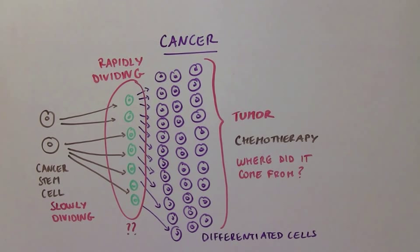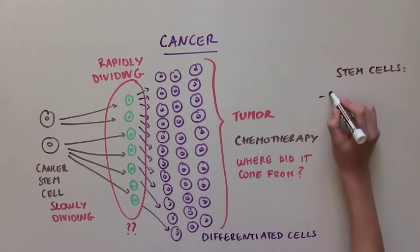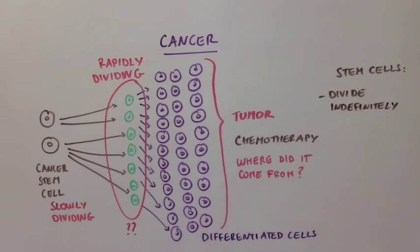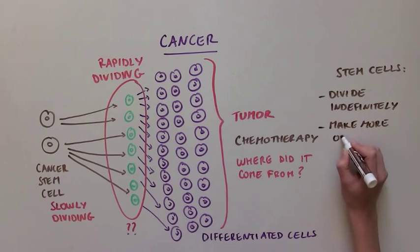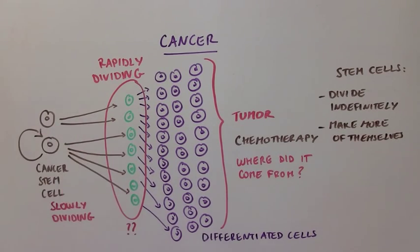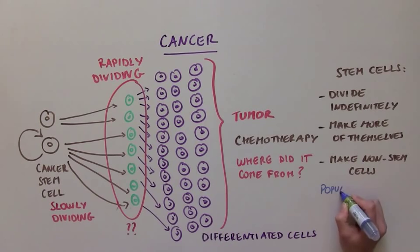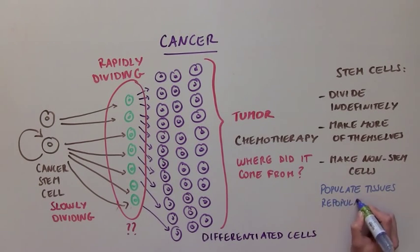Stem cells, both normal and cancer stem cells, have a few important characteristics. Unlike normal cells, stem cells divide indefinitely, can make more of themselves, as well as make non-stem cells. So, they are responsible for populating tissues and repopulating tissues in case of injury.